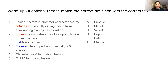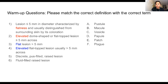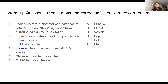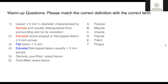The first exercise is to match the correct definition with the correct term. The first lesion is less than five millimeters in diameter, flat, and has a distinct color from the surrounding skin. The student correctly identifies this as a macule.